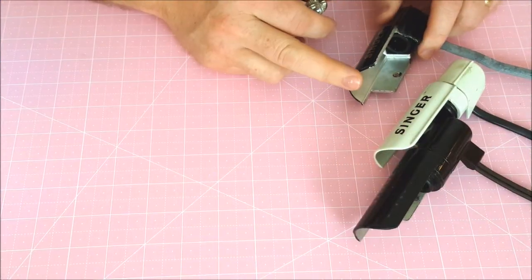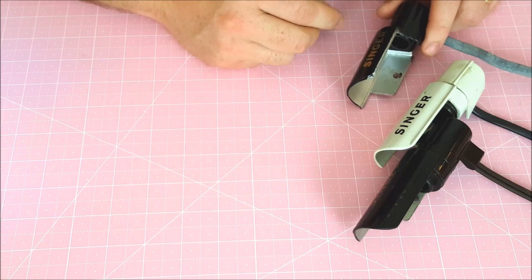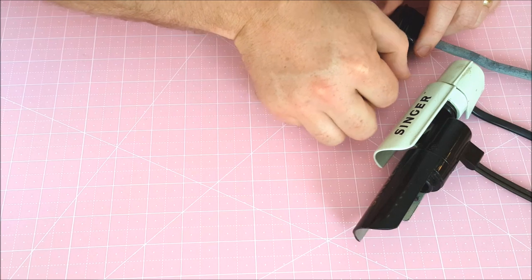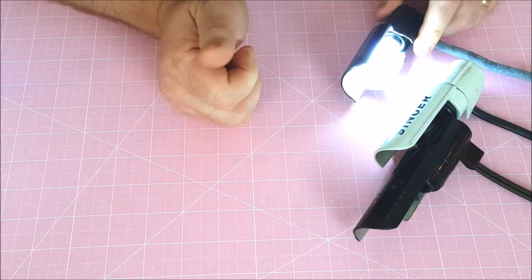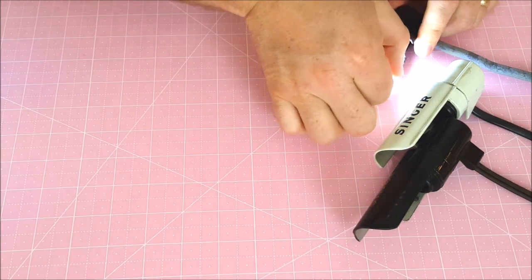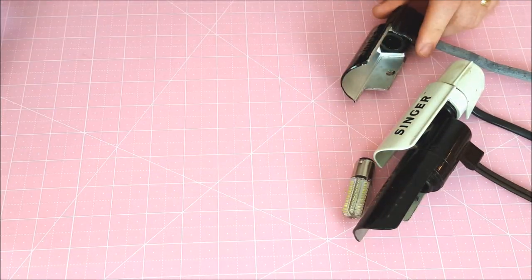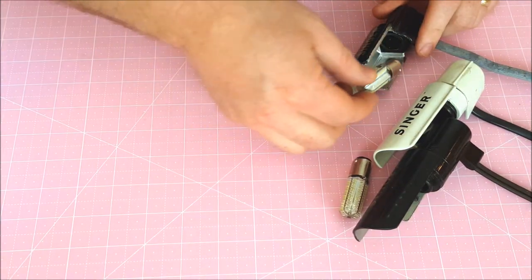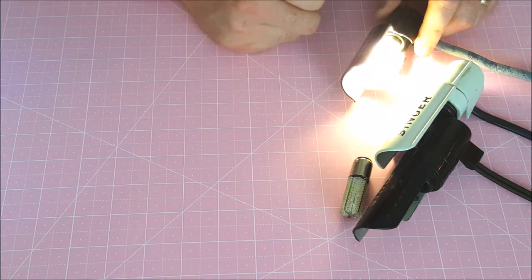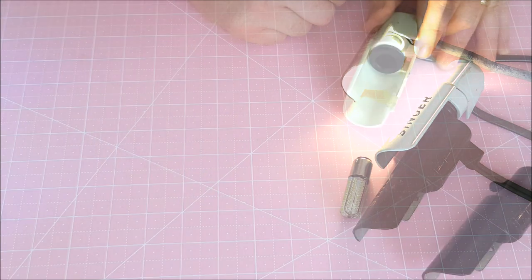This is the light housing on a standard black 221 Featherweight. This is the bright white bulb. They go in, give it a little turn and you can see that is the bright white. The next is the warm white and you can see it's kind of more like an incandescent bulb in the color that it puts off.